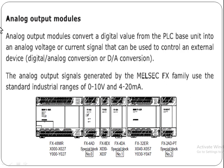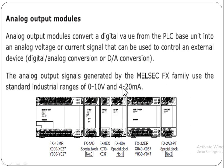This module converts the digital signal from the PLC to an analog signal, which is then used to control motors and other devices. The analog output signals generated by the MELSEC FX family use the standard industrial ranges of 0 to 10V for voltage signals and 4 to 20mA for current signals.